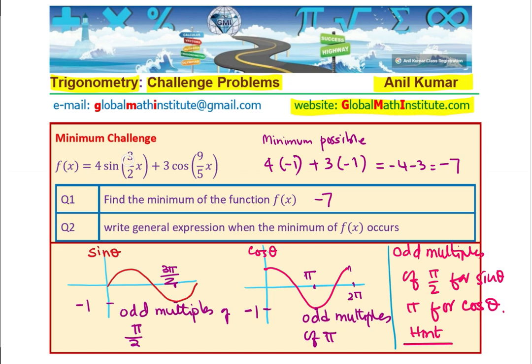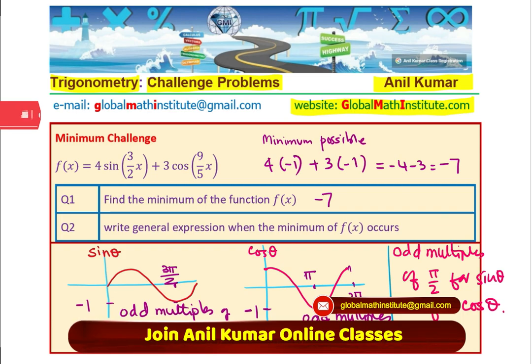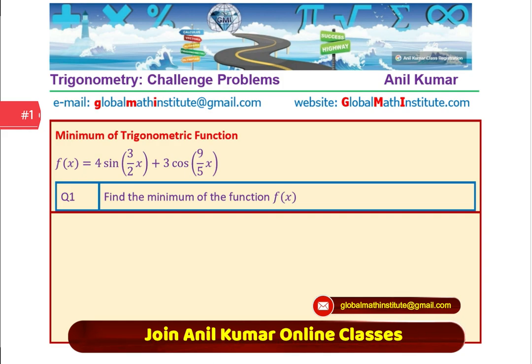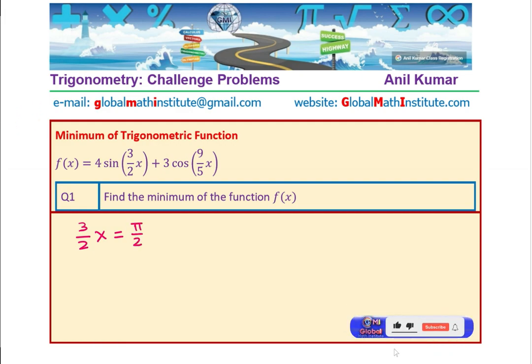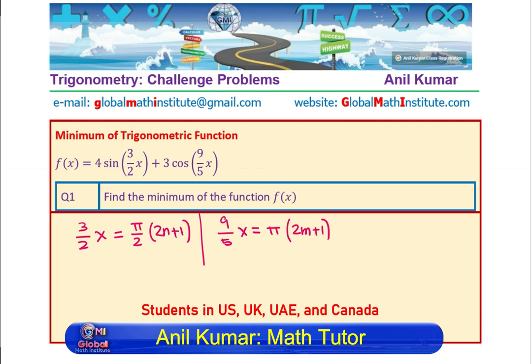That is the hint for you to solve this particular question. That means, 3 by 2 x should be odd multiple of pi by 2. Similarly, 9 by 5 x should be odd multiple of pi. So, let us move forward. So, what we have come to decision is that, 3 by 2 x should be equal to pi by 2 times 2n plus 1. Similarly, 9 by 5 x should be odd multiple of pi, where n and m are integers.